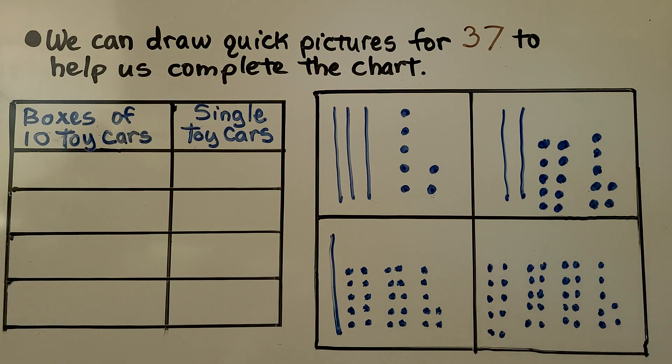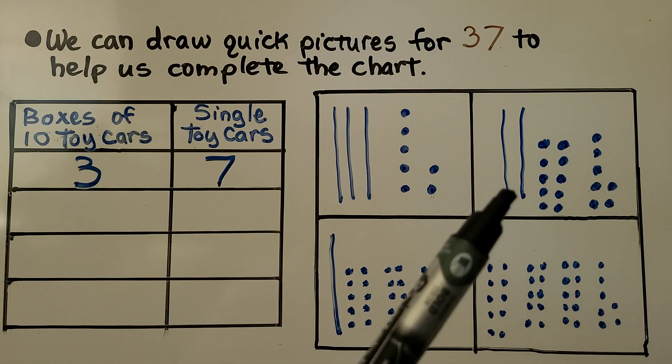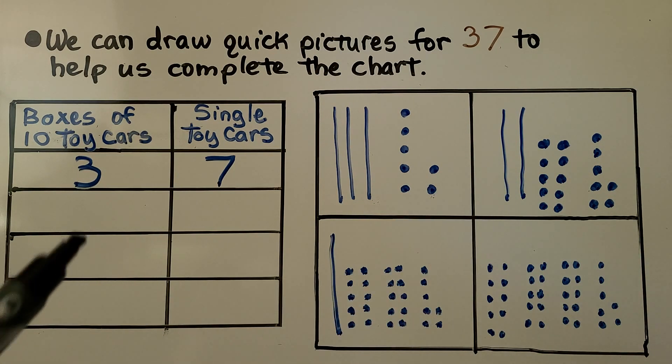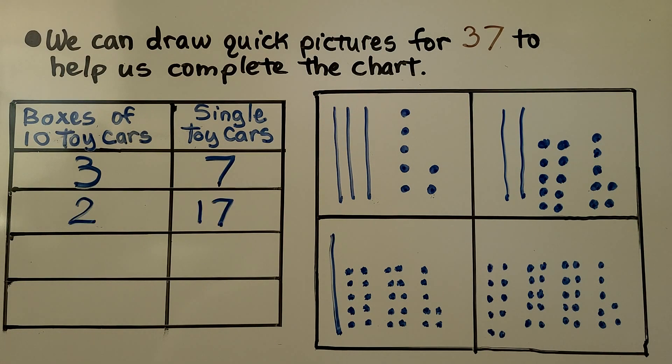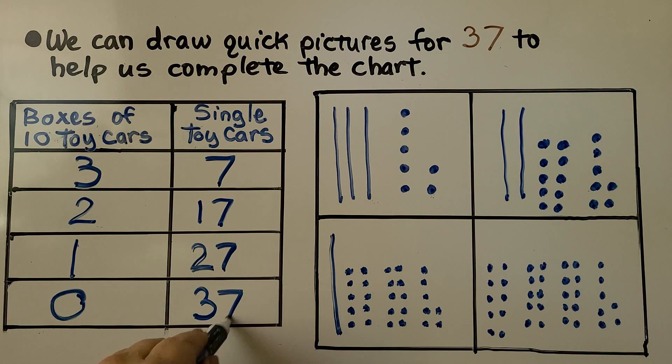We can fill the chart with our information. Here we have 3 tens, 7 ones. Bob can have 3 boxes of 10 toy cars and 7 single toy cars. That's this one. He can do 2 boxes of 10 toy cars and 17 single toy cars. He can have 1 box of 10 toy cars and 27 single toy cars. Or he can have 0 boxes of 10 toy cars and 37 single cars. Do you see the pattern?